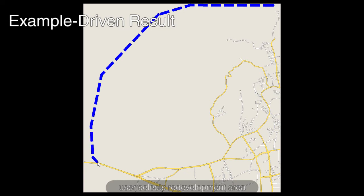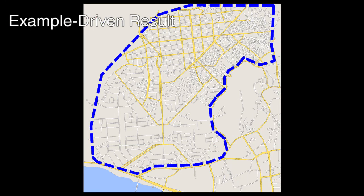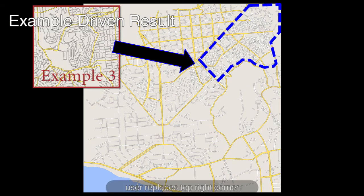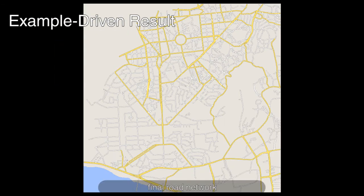In this final example, the user wishes to design the potential road growth of a city similar to Yangmen China, one of the 10 fastest growing cities in the world. The user selects a target area and source examples producing a new road network.